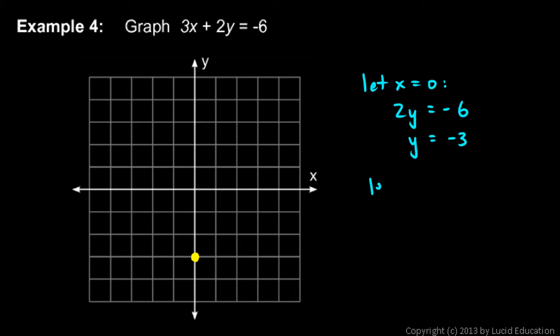And then let's let y equals 0. If y is equal to 0, we're left with 3x equals negative 6, so x must equal negative 2. That's right here. And then two points is enough to draw in the line.